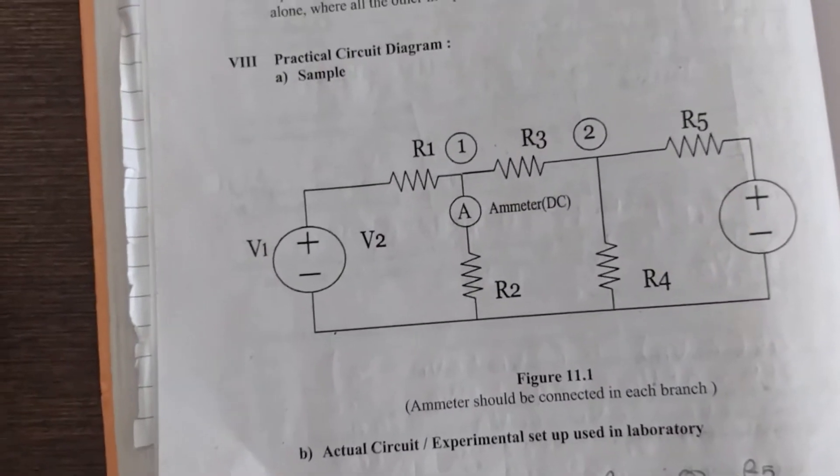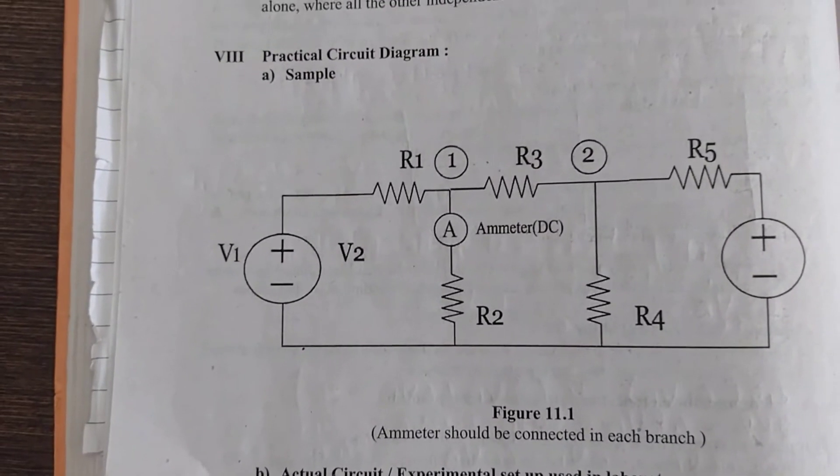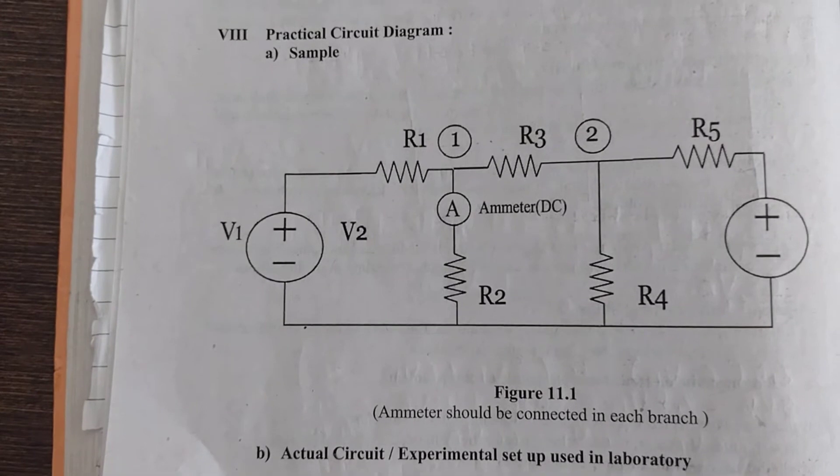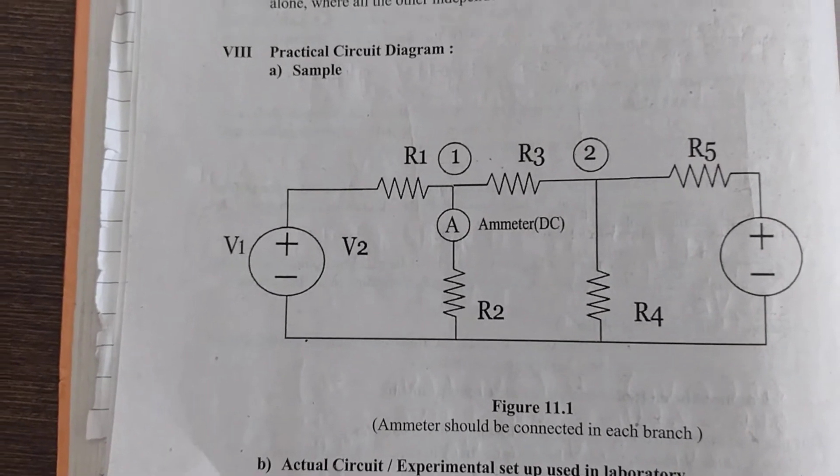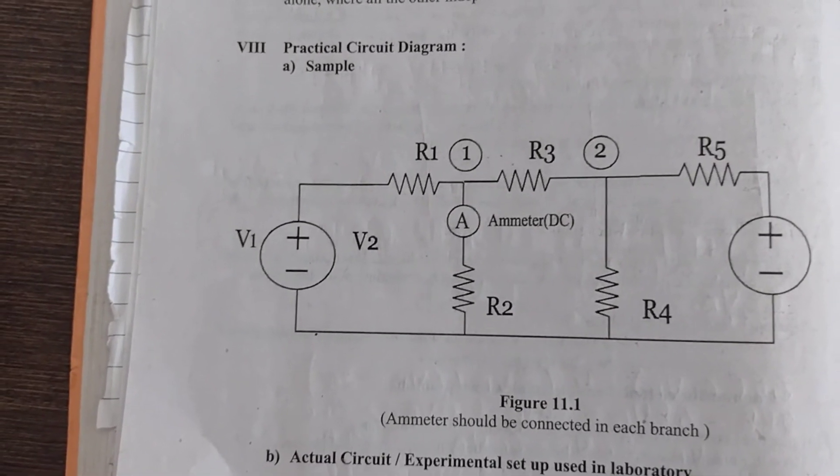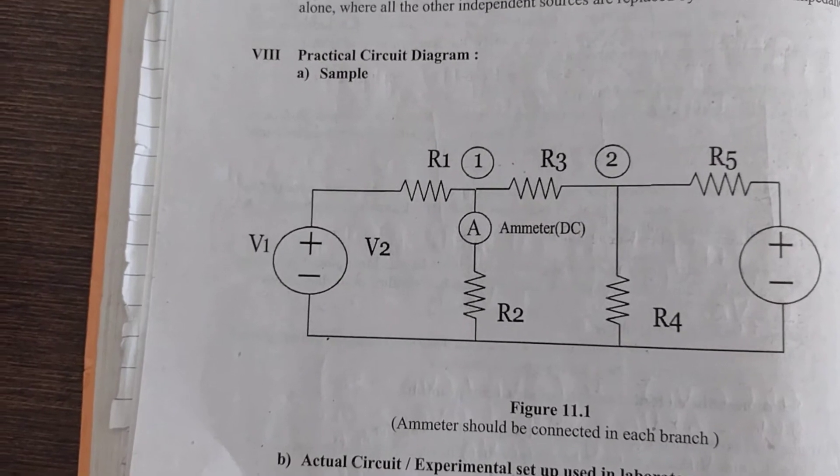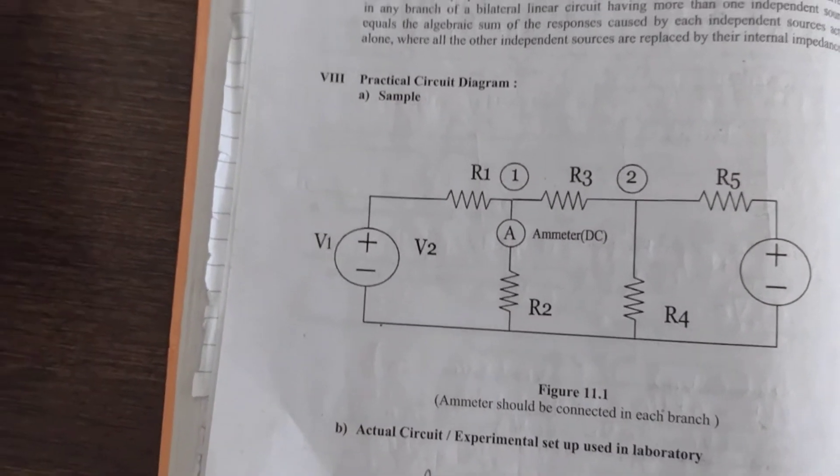Looking at the practical circuit diagram, we have V1 and V2 sources connected with one emitter connected to R1, R2, R3, R4, and R5—five resistances connected.